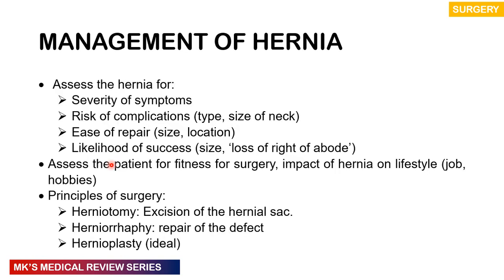How do we manage hernias? We assess the hernia for severity of symptoms with risk of complications — the type and size of the neck. Those with a narrow neck, like indirect hernias, are at high risk of strangulation. We assess the ease of repair, the likelihood of success, and patient fitness for surgery. The principles of surgery: we may perform a herniotomy where we excise the hernia sac, a herniorrhaphy where we repair the defect, or a hernioplasty — the ideal choice — where we excise the sac and repair the defect.